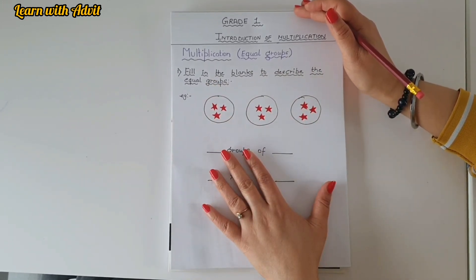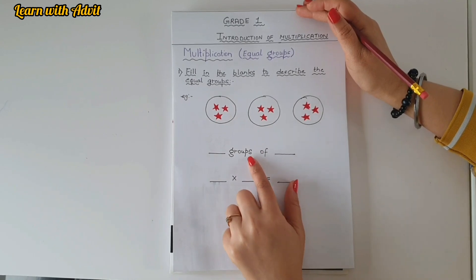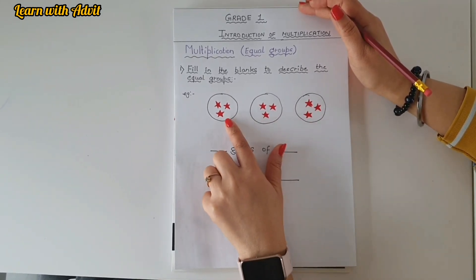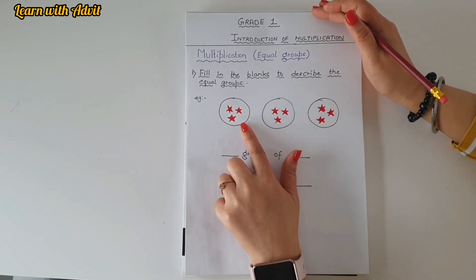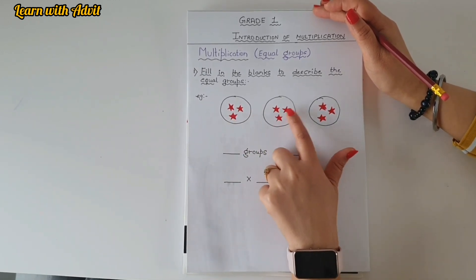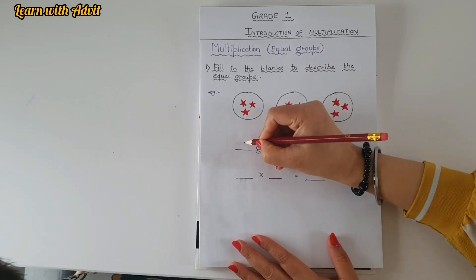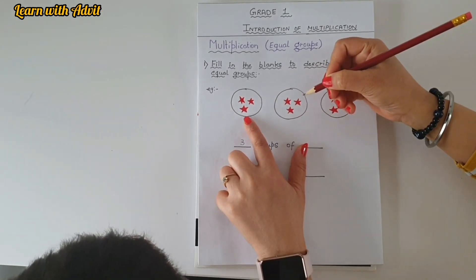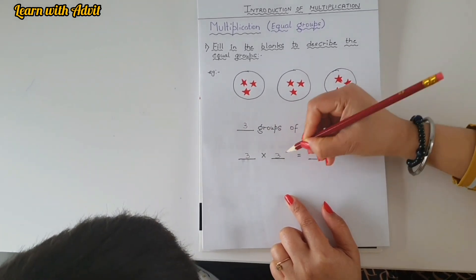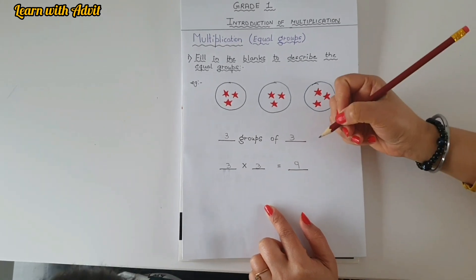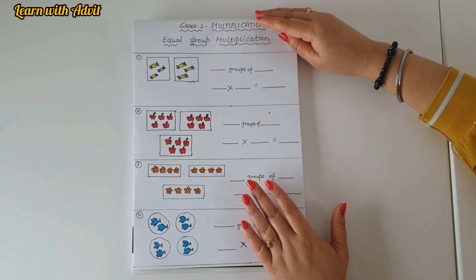I am explaining one example, then you have to do the rest of the worksheet by filling in the blanks to describe the equal group. How many groups are there? The big circles are the groups. There are one, two, three groups. In each group, how many stars are there? One, two, three — in each group. So three groups of three objects. How do you write the equation? Three times three equals nine.